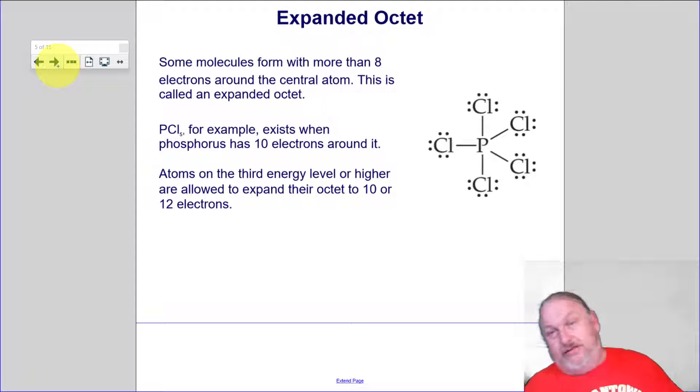Now, the expanded octets. Again, this is where they're really exploring. And it just doesn't totally make sense. And this could change. This is our current model. So some molecules can form more than eight electrons around the central atom. This is called an expanded octet. But what's going on is these are the bigger molecules, and you've got the d and the f orbitals that can form bonds.